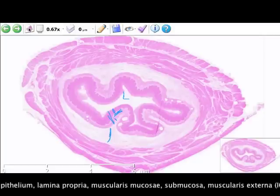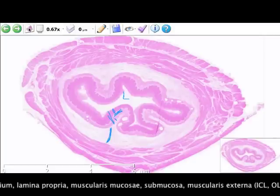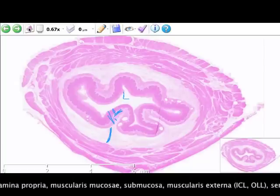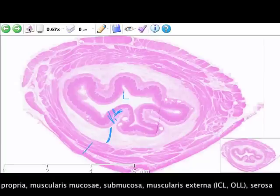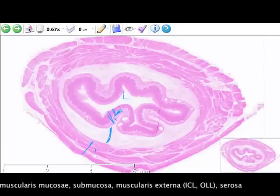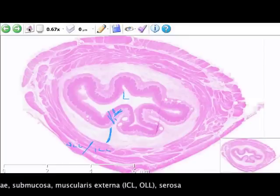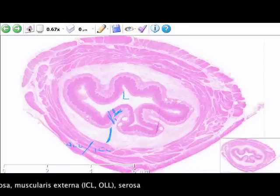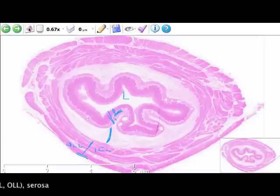We have the submucosa, which is connective tissue. We have the muscularis externa, which is most commonly divided into the inner circular layer and the outer longitudinal layer. And then we have the connective tissue of the serosa. We have the mesothelium of the serosa. Layers of an organ at midnight on a Saturday night.